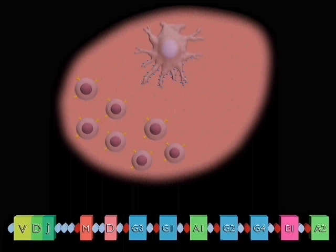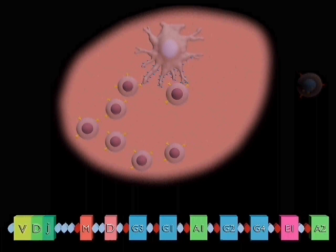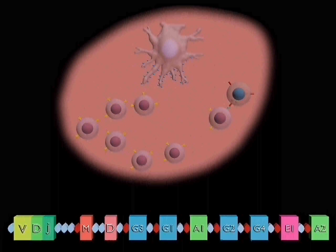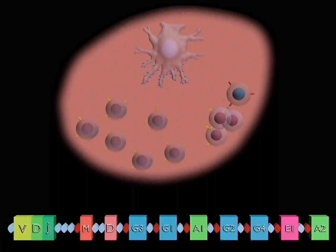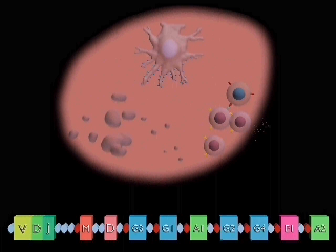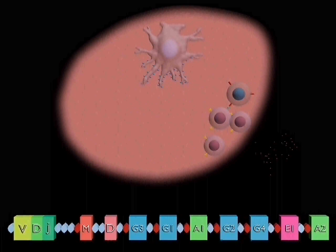Follicular dendritic cells in the germinal center hold stores of antigen on their surface. B cells compete with each other for the antigen, and only B cells whose mutations have produced higher affinity antibodies will compete effectively for the limiting amount of antigen. This is now processed and presented to T cells, which signal division and differentiation. But B cells with low affinity antibodies have no antigen to present to the T cells and die by apoptosis.